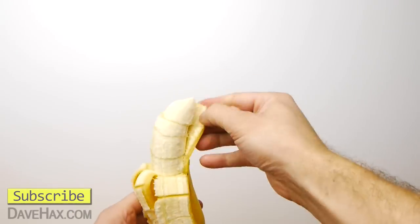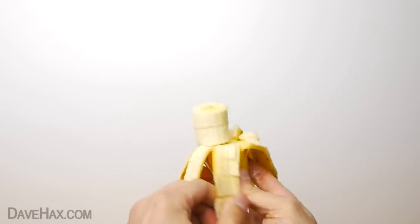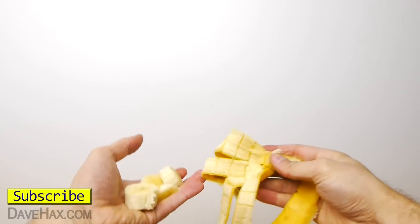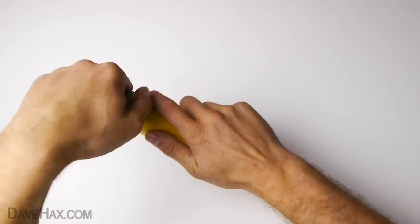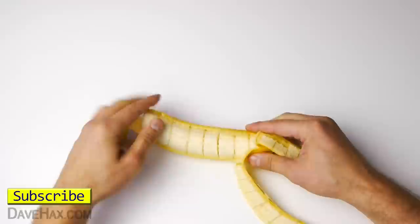Then go ahead and peel it. If they haven't seen this trick before they'll be impressed by your amazing pre-sliced banana. Pretty cool huh? It's a really simple little trick and it's great for amusing children.